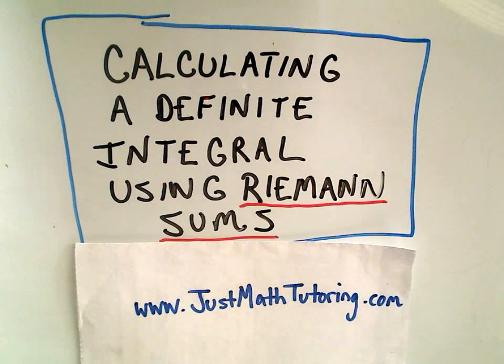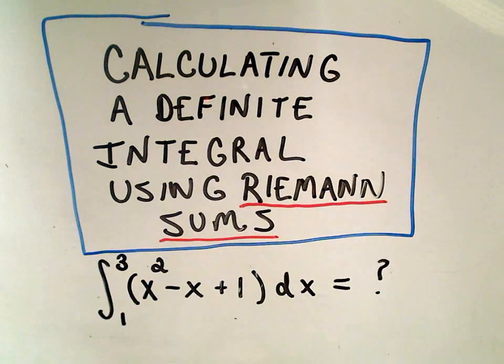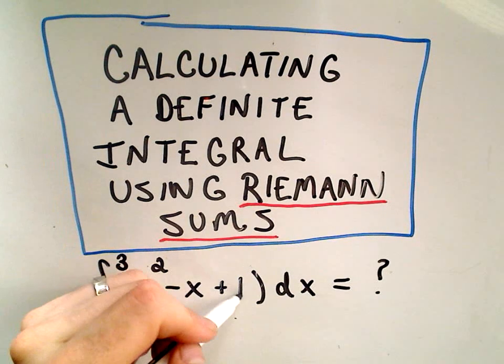In this video I want to calculate a definite integral using Riemann sums. What I want to do is calculate the value of this definite integral from 1 to 3 of x squared minus x plus 1 dx.